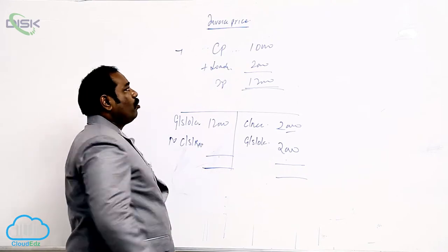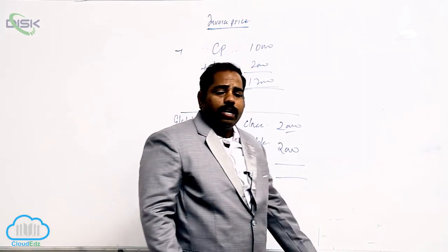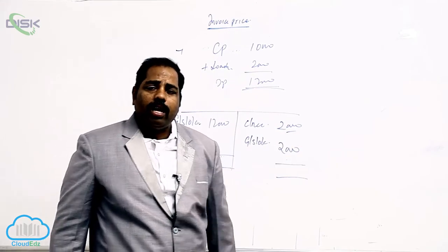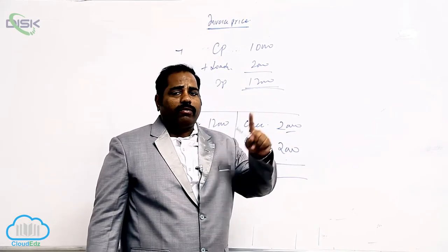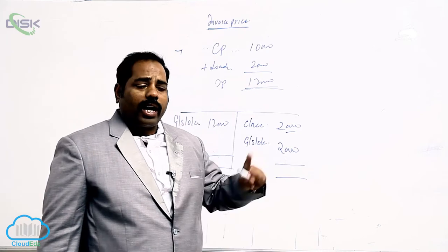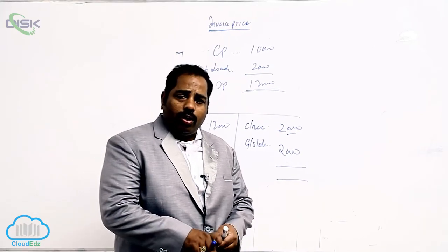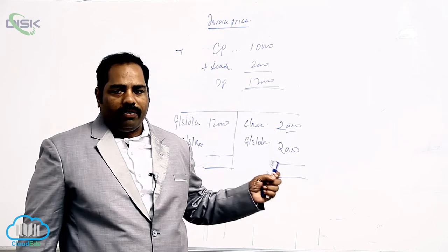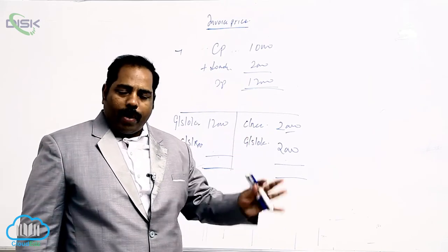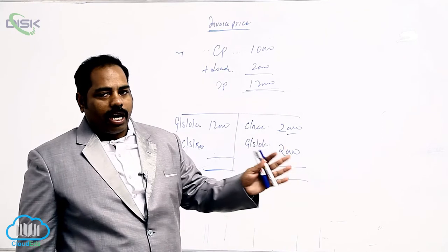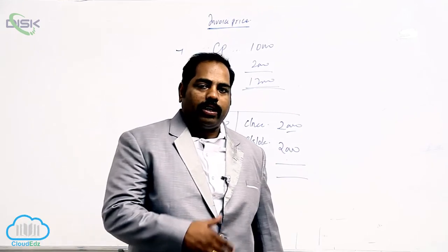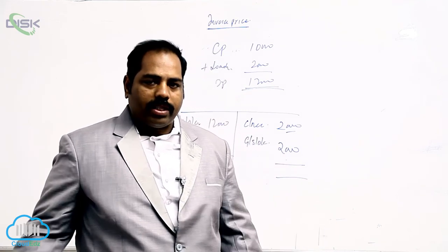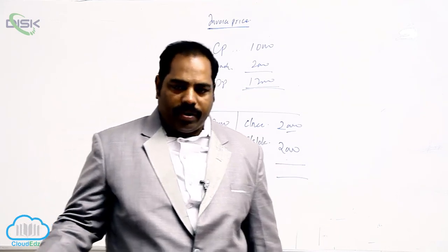So, whenever goods are sent at invoice price, two additional entries will come. One is for unloading of the goods sent, and the second one is for unloading of the unsold stock or consignment stock. Why do we have to unload? Because unloading is done only to find out the exact profit or loss. When you send the goods at invoice price, we will not know the exact profit — that is why whenever we add extra price, it has to be unloaded to find out the exact profit.